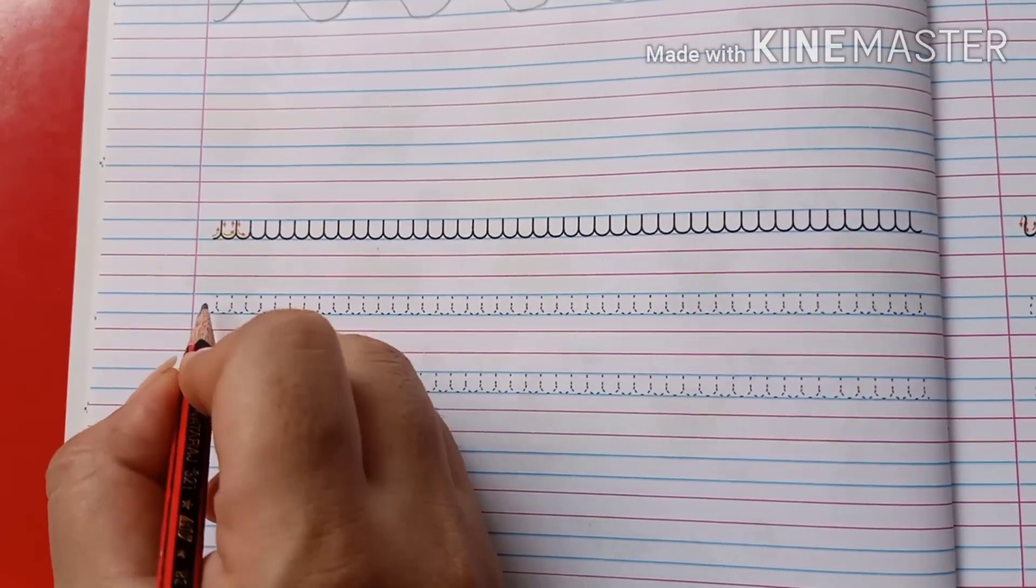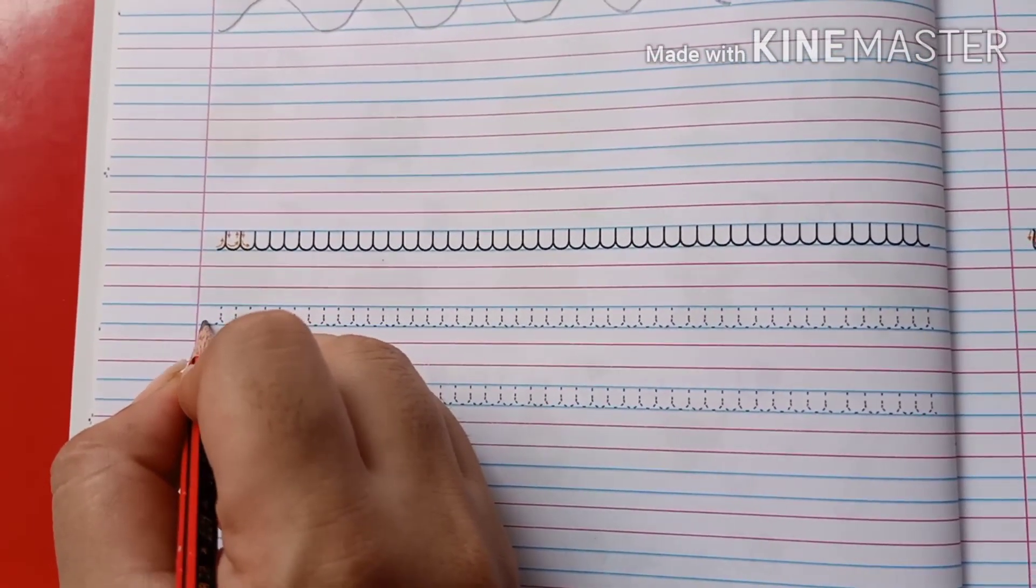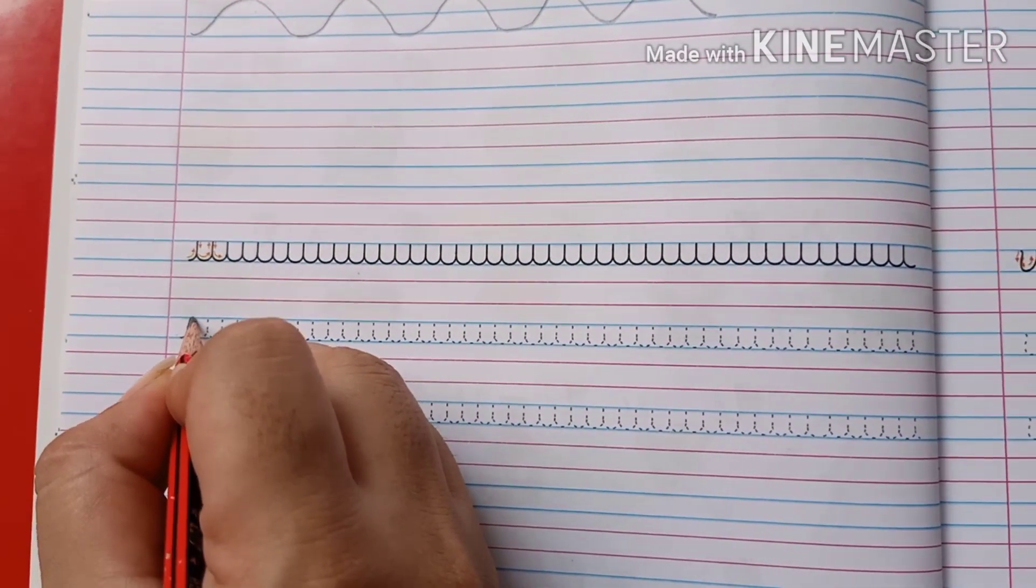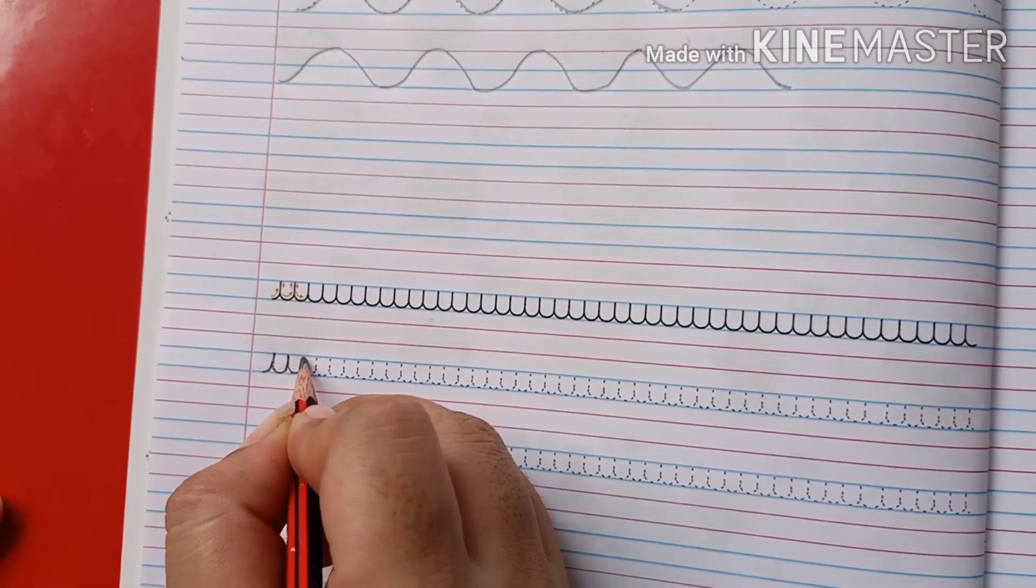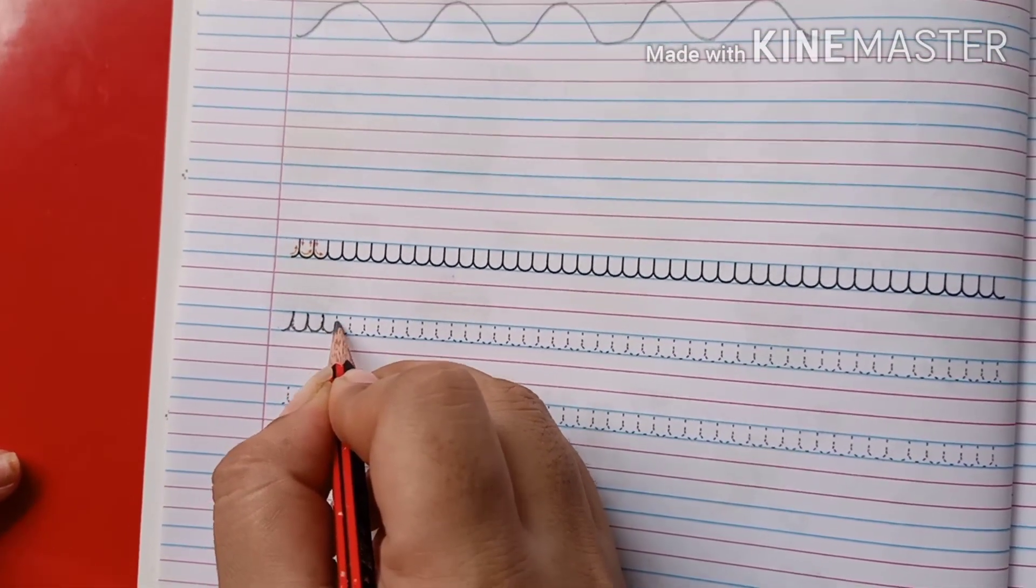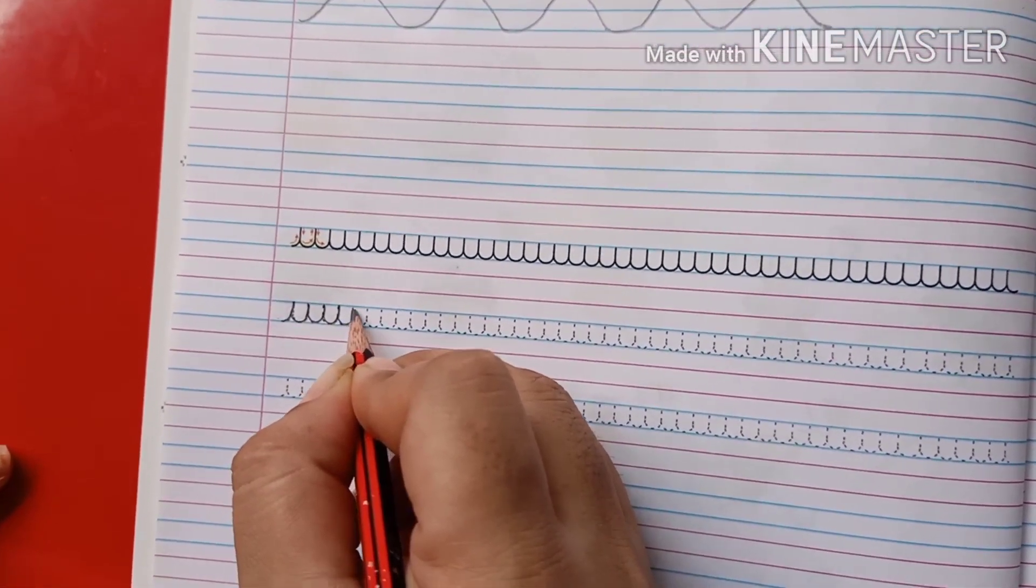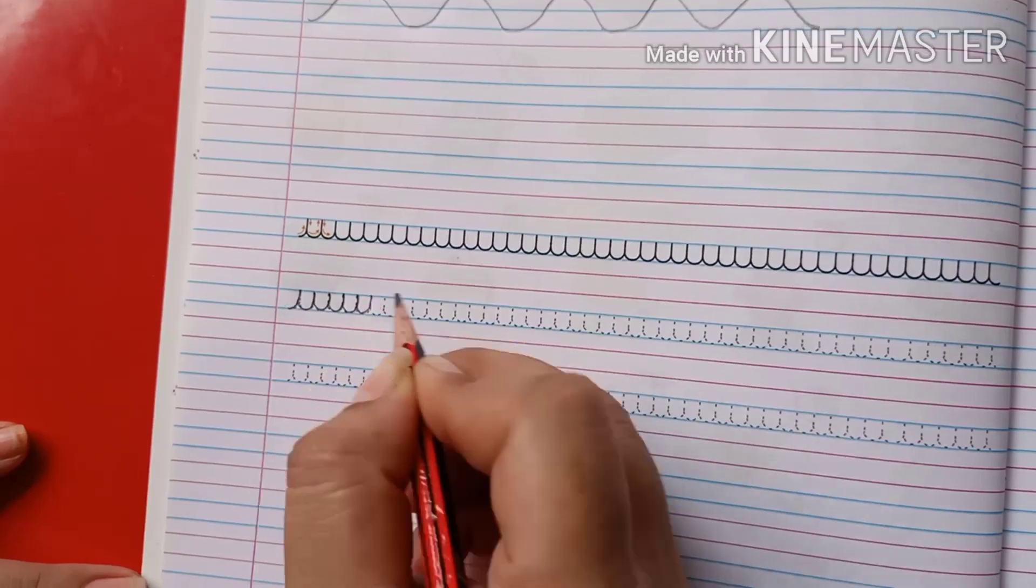Look this pattern. You have to complete with me. Write down, down curve, make again down curve. Again, you have to complete this pattern.